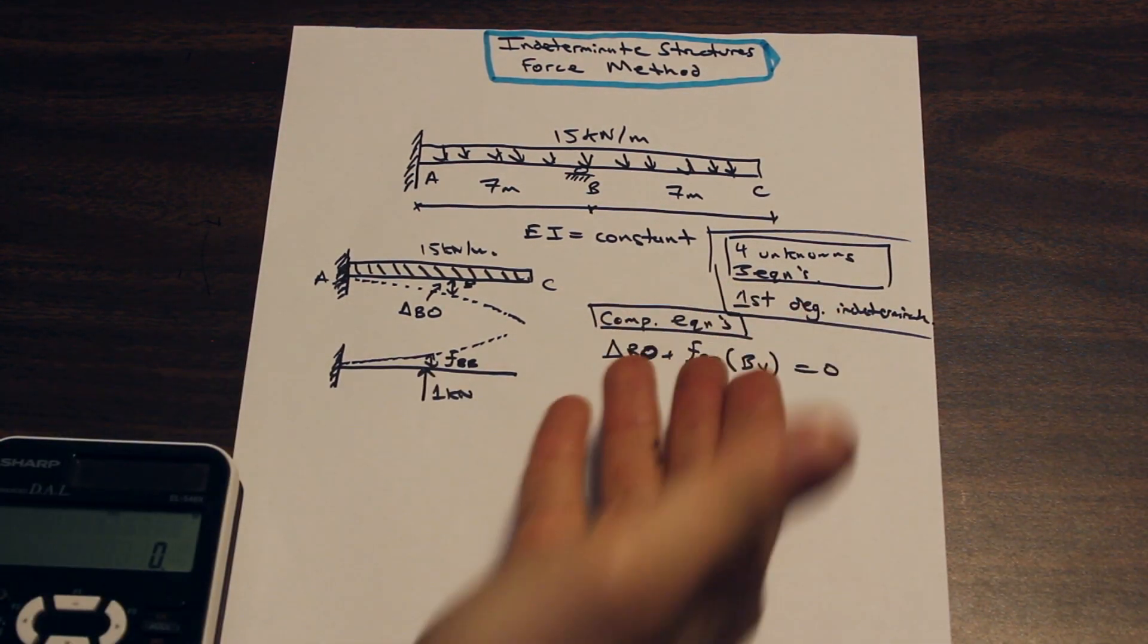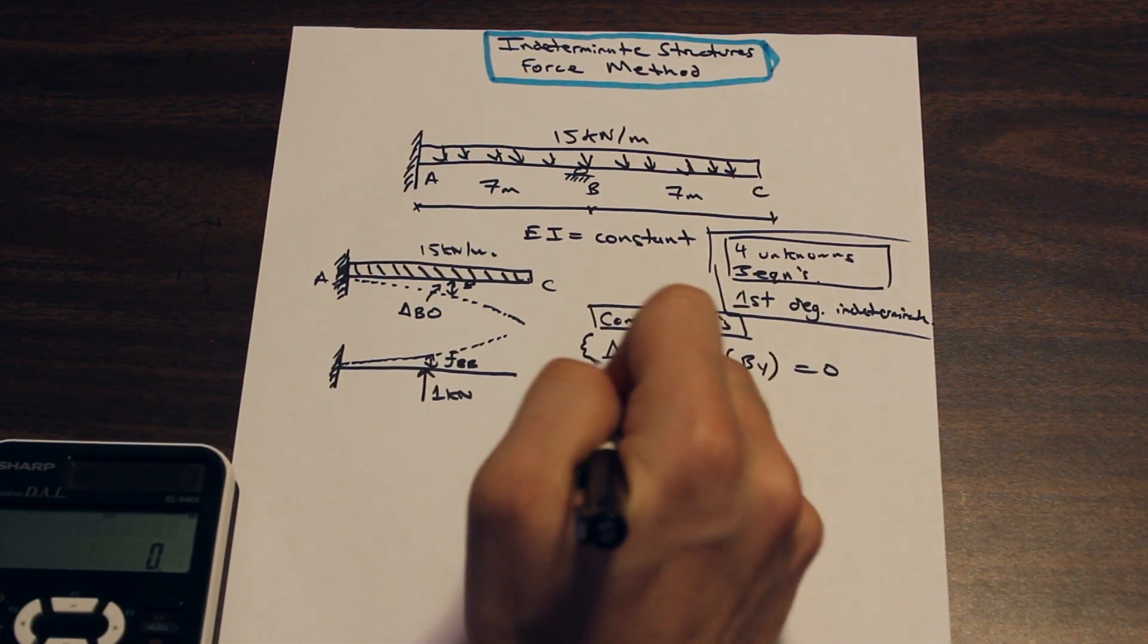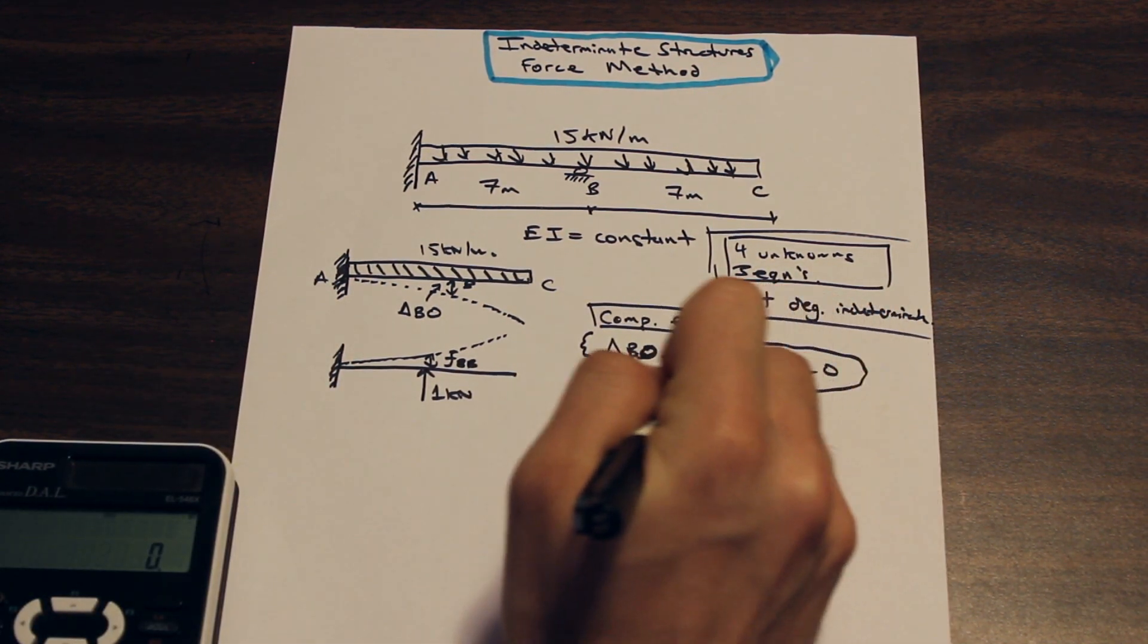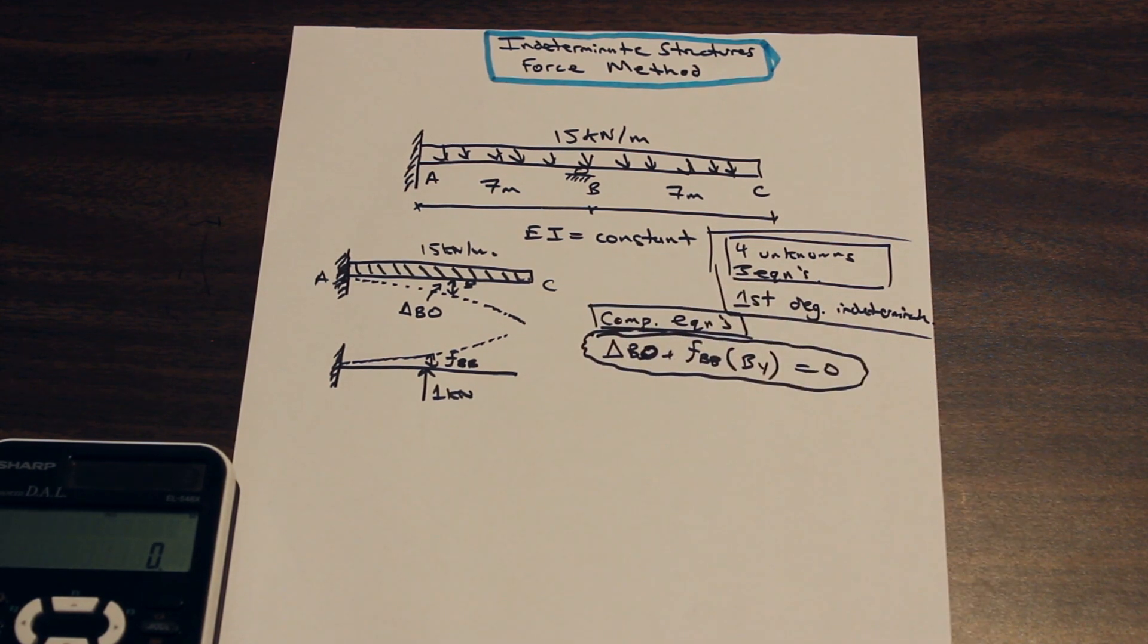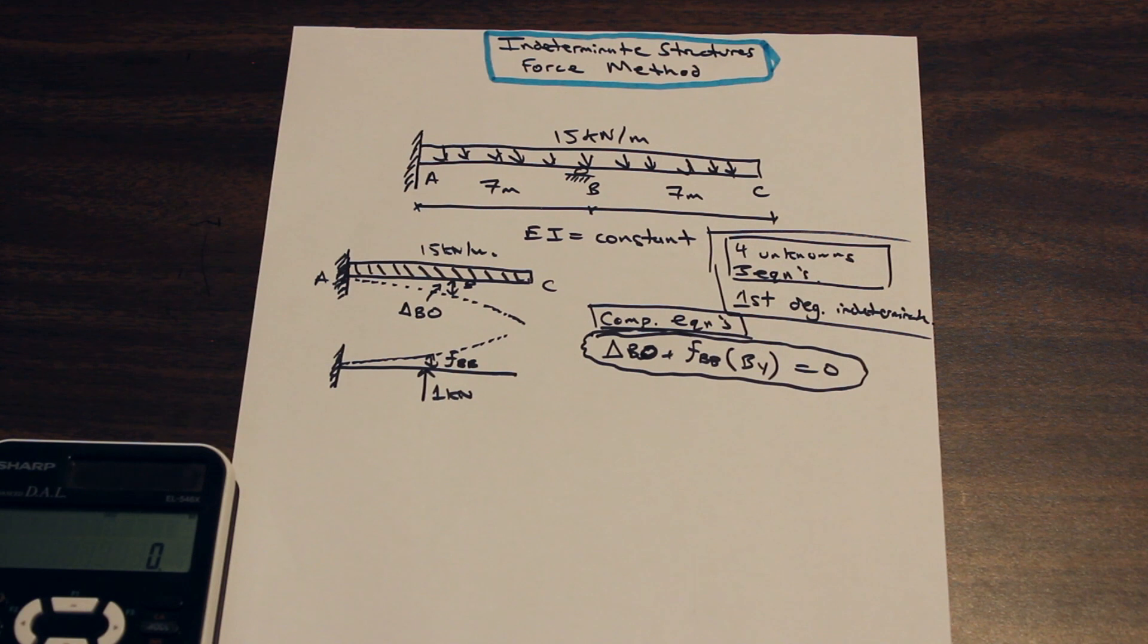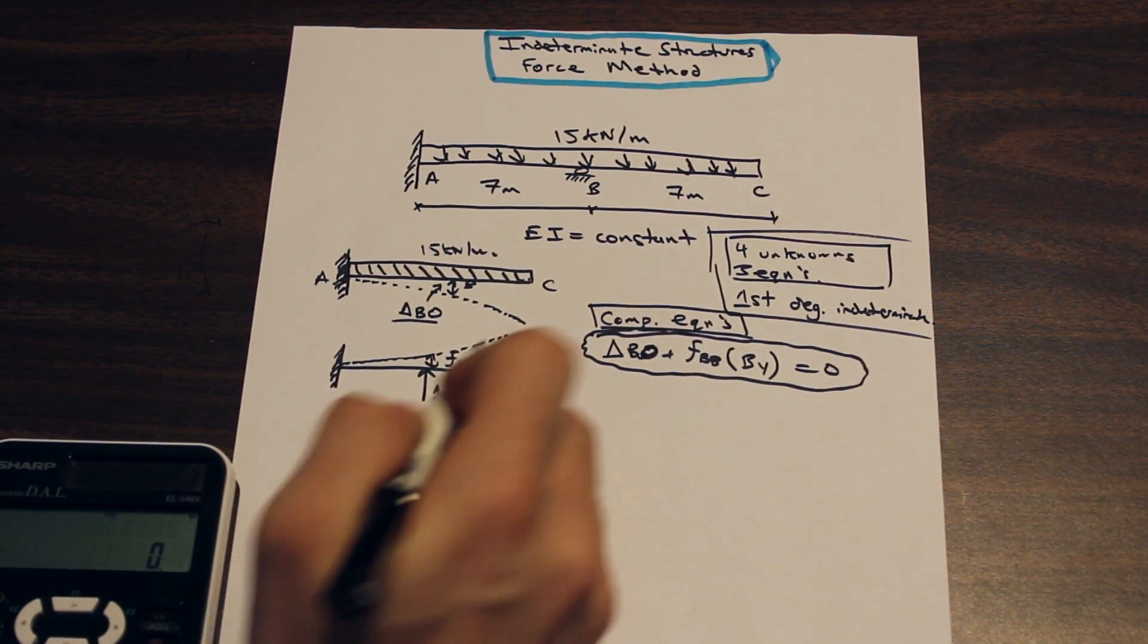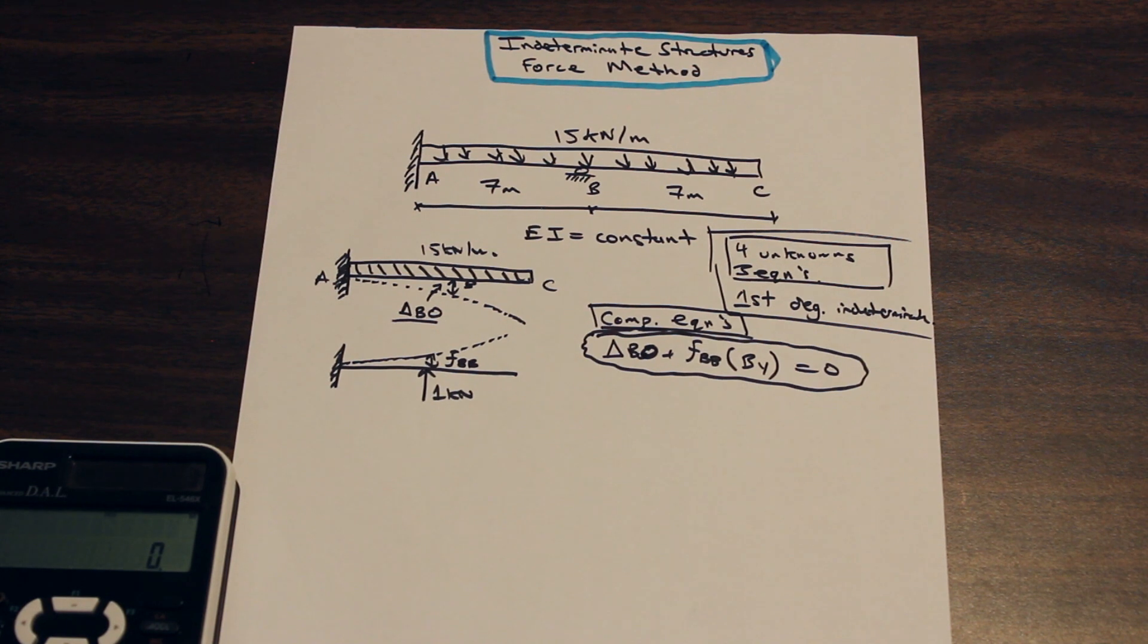I'm not going to get into the proof. I'm sure you're here just because you want to see how to solve the problem. So this here is the equation that we're going to need to plug in stuff in order to solve for our reaction. So what do we need to do now? Well, we need to find bo, delta bo, and we need to find FBB. And we're going to do that by using deflection equations. So go to your deflection table and look for the cases in which these exist.